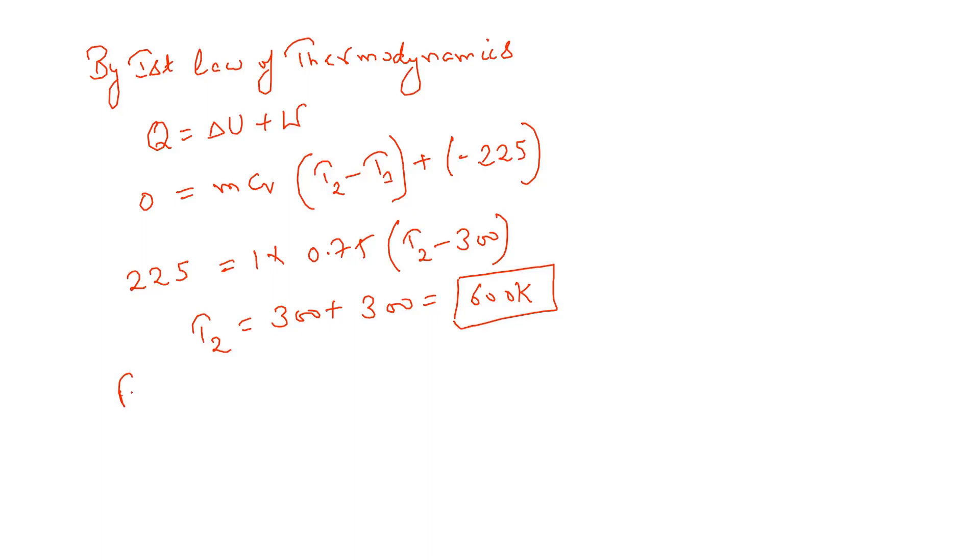For ideal gas equation we know that PV is equal to nRT where R is a gas constant and T is the temperature. V is constant because it has been given.